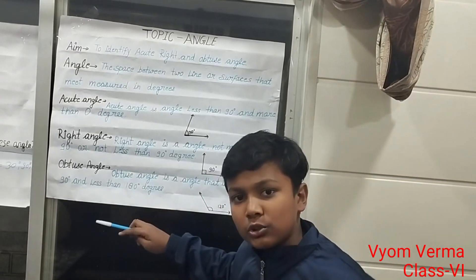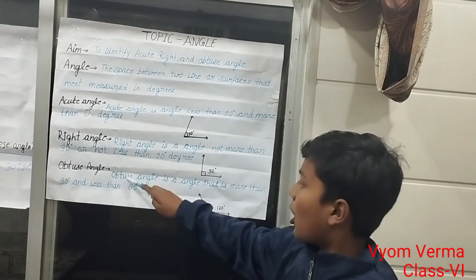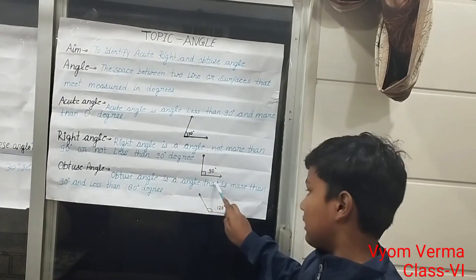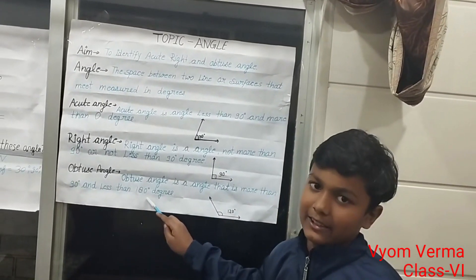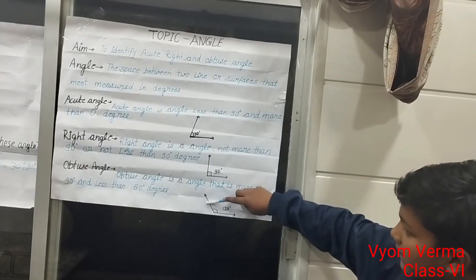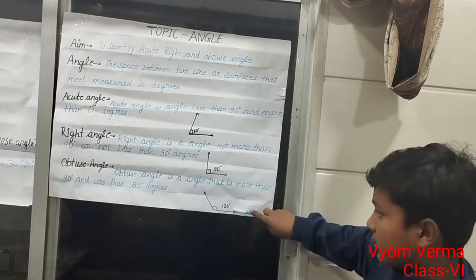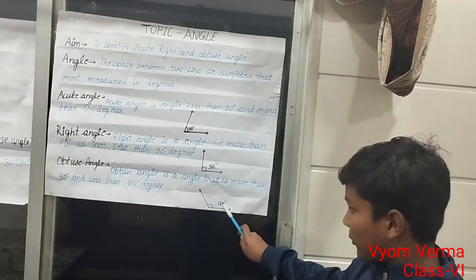Do you know what an obtuse angle is? I will tell you. An obtuse angle is an angle that is more than 90 degrees and less than 180 degrees. Here you can see an example of an obtuse angle. It is a 120-degree angle.